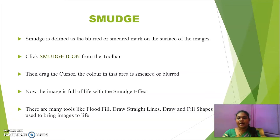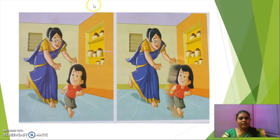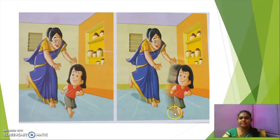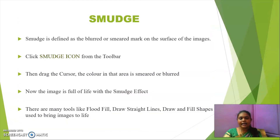Now we are moving into a process called smudging. Smudging means we can leave a blurred or smeared mark on the surface of the image. For example, if a girl is running in the image, we can add a smudge effect to show motion. To do that, click the Smudge icon on the toolbar, then drag the mouse over the part of the image where you want the smudging to appear. The color in that area will get smudged or blurred. This is how we add a smudge effect to an image.